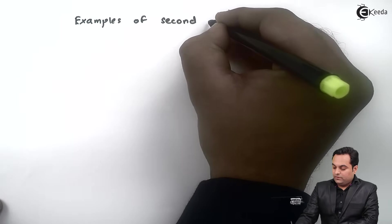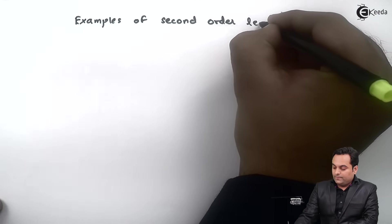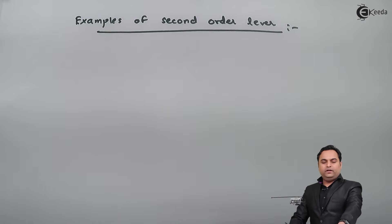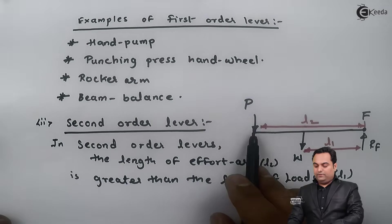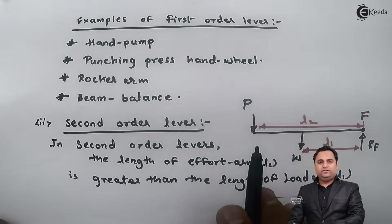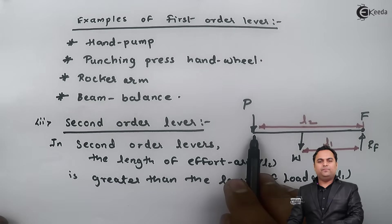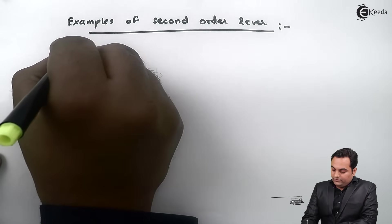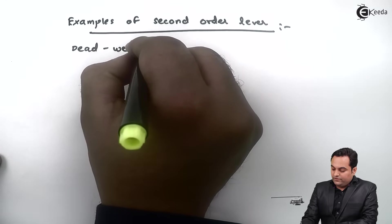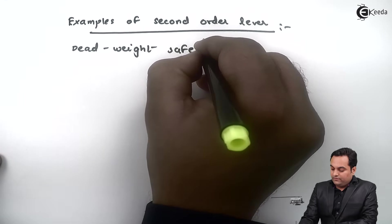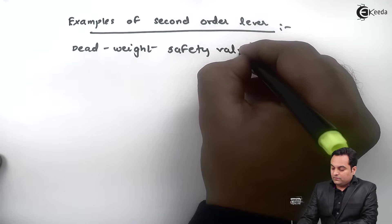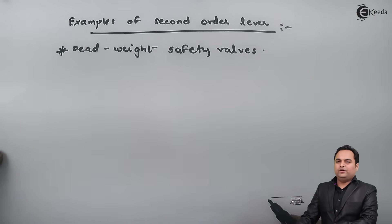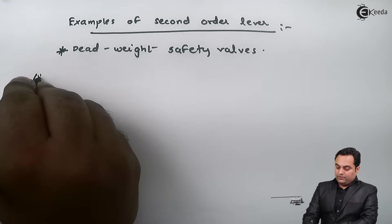In second order levers, since the effort arm is greater, the effort applied is less, giving maximum mechanical advantage. An important application is dead weight safety valves, which are mostly used in boilers and operate on the second order lever principle.